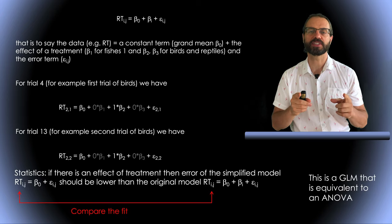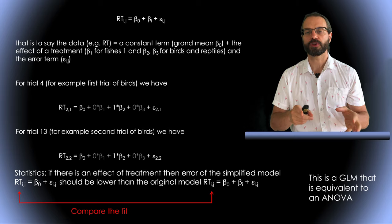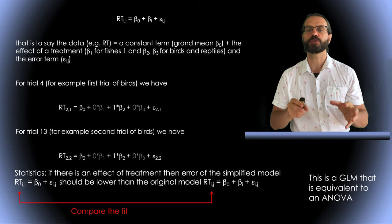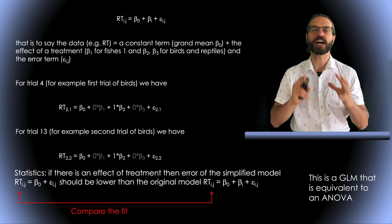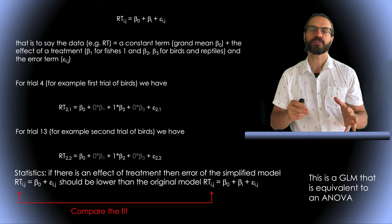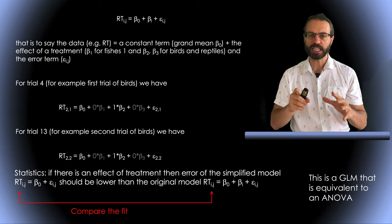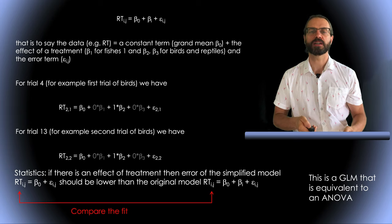To assess if the model is significant, the fit of the model with the beta parameter for each category, the r square, is compared with the fit of the model without these beta parameters. If it is significantly different the ANOVA is significant. Again this is a GLM that is strictly equivalent to performing an ANOVA.